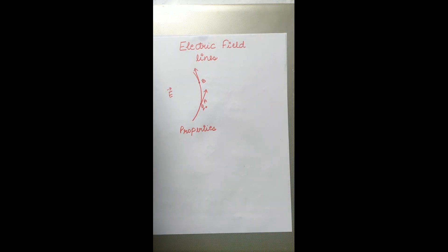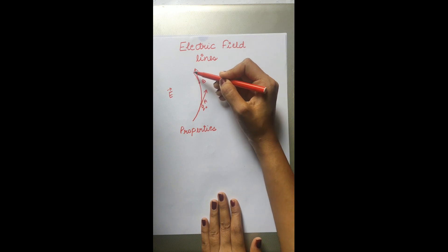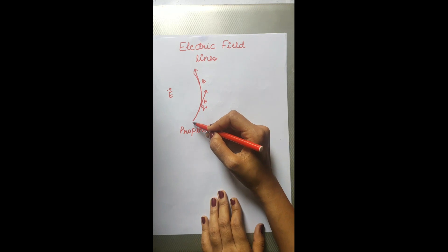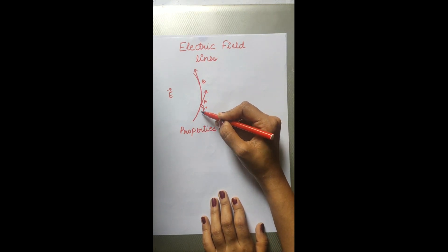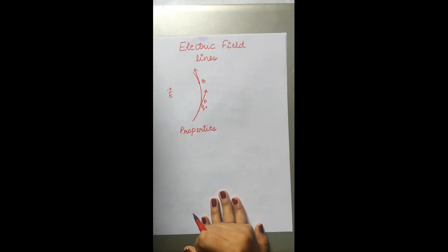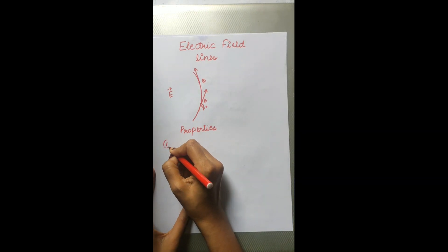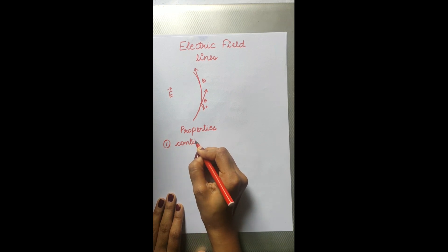The first property states that electric field lines are continuous curves — there is no break in between. They form a continuous curve because the electric field line represents the path of a unit positive charge. If there were breaks in between, it would mean the charge is vanishing at that point, which is not possible. Hence, electric field lines are continuous curves.